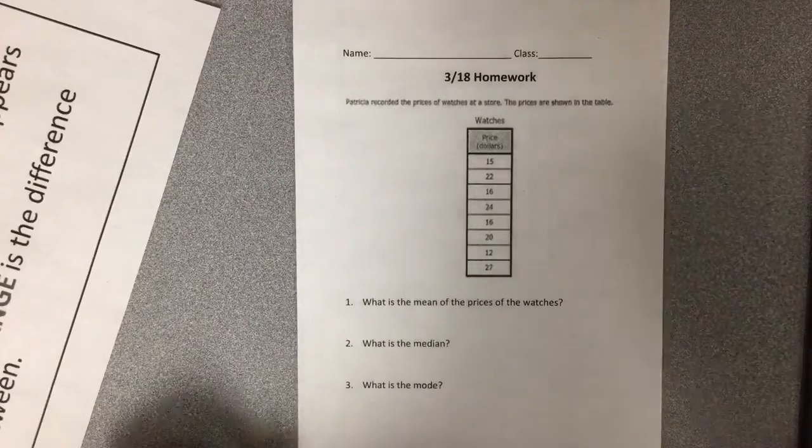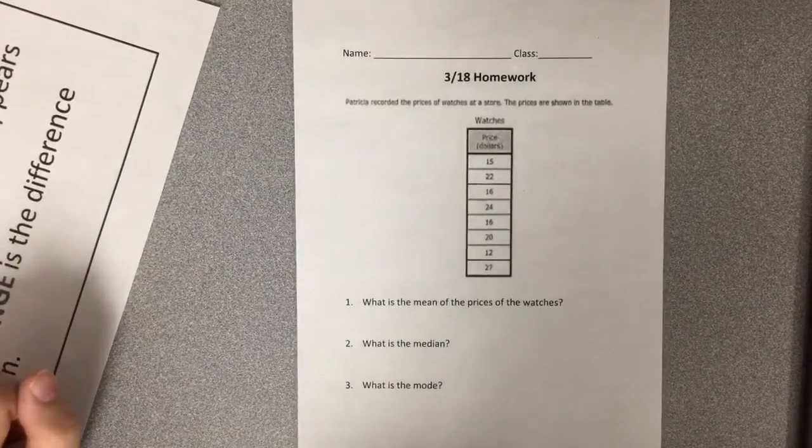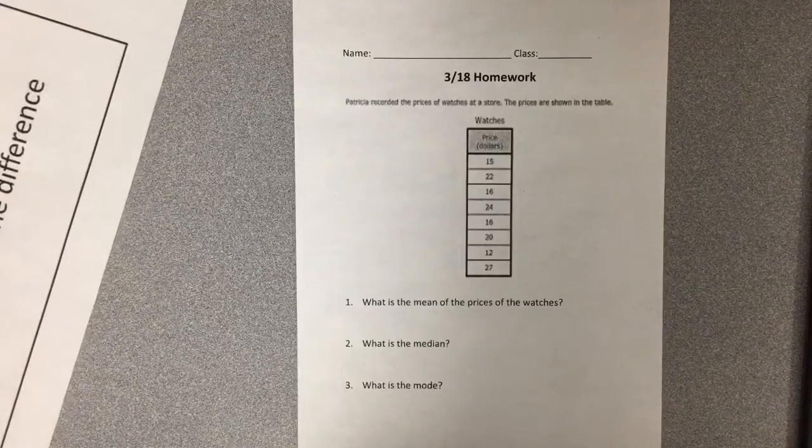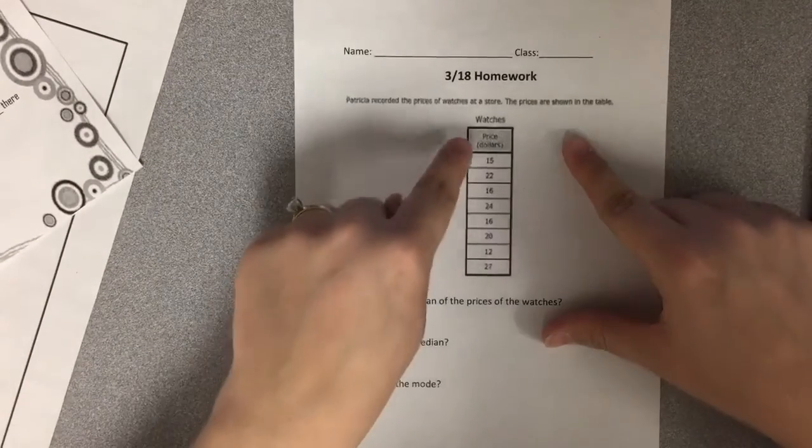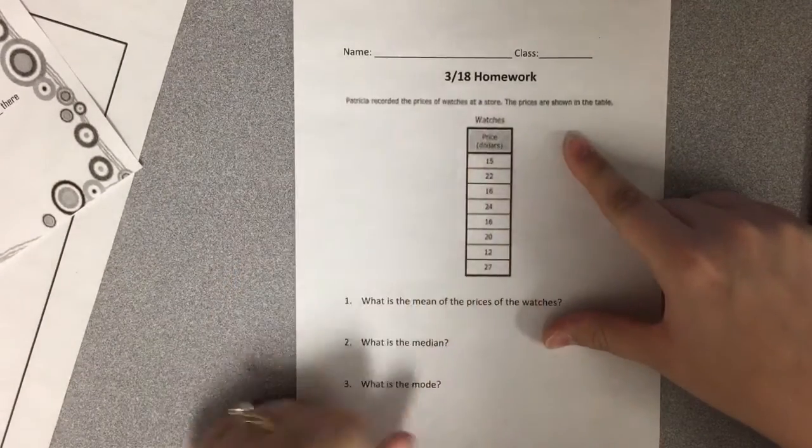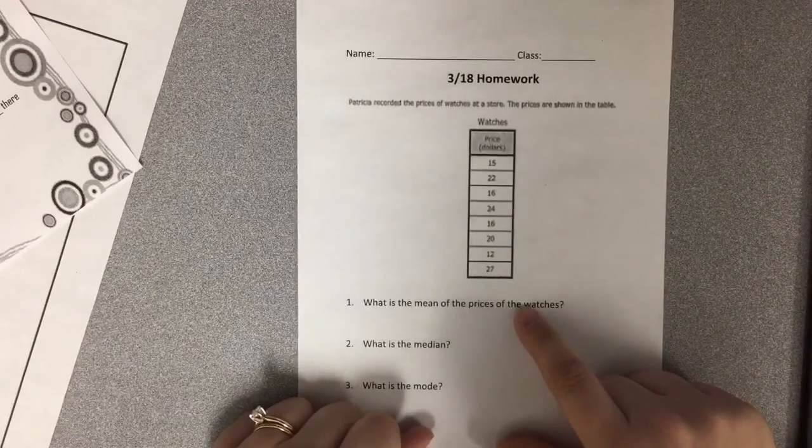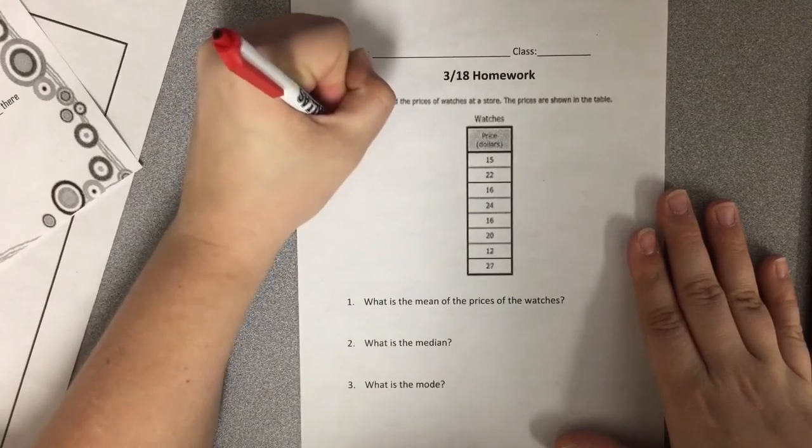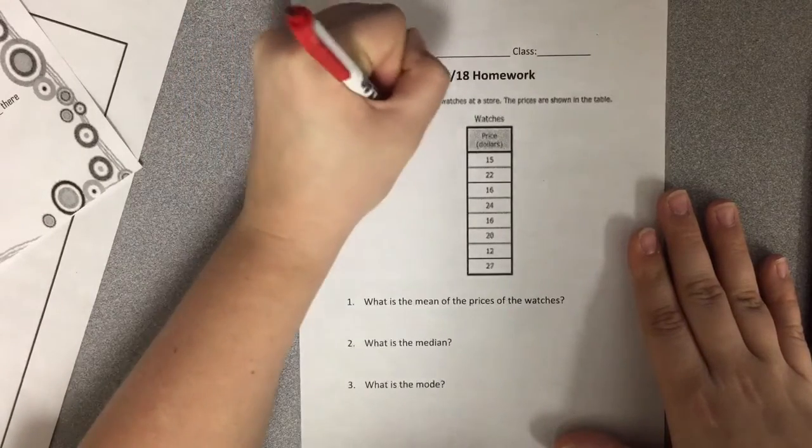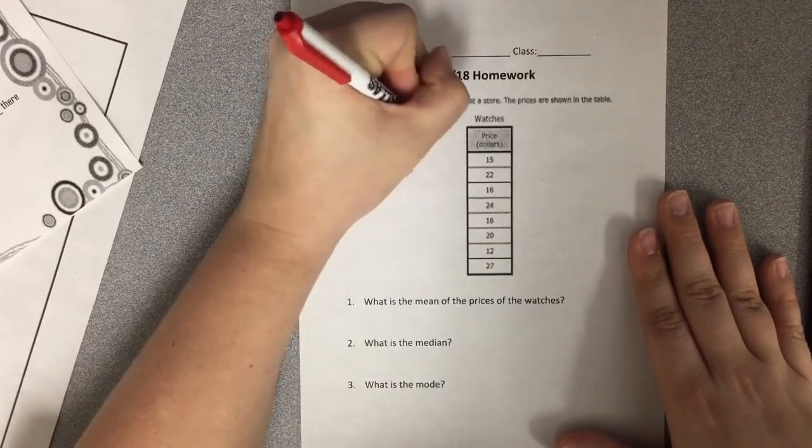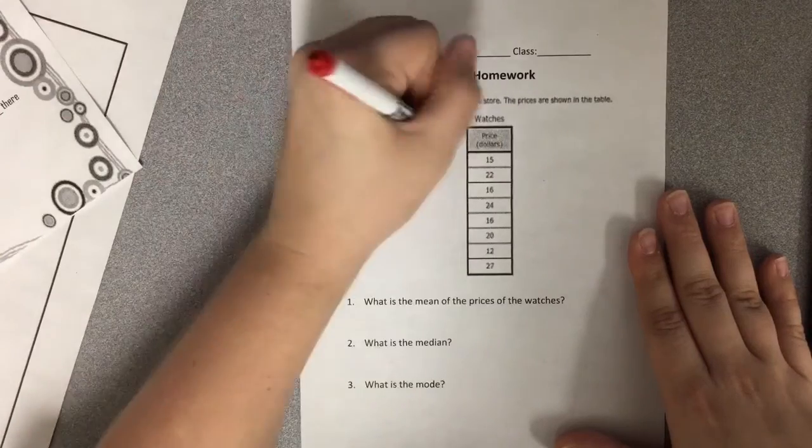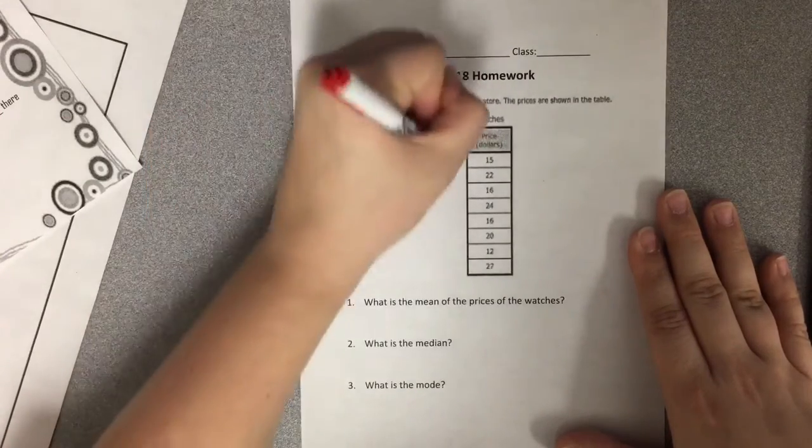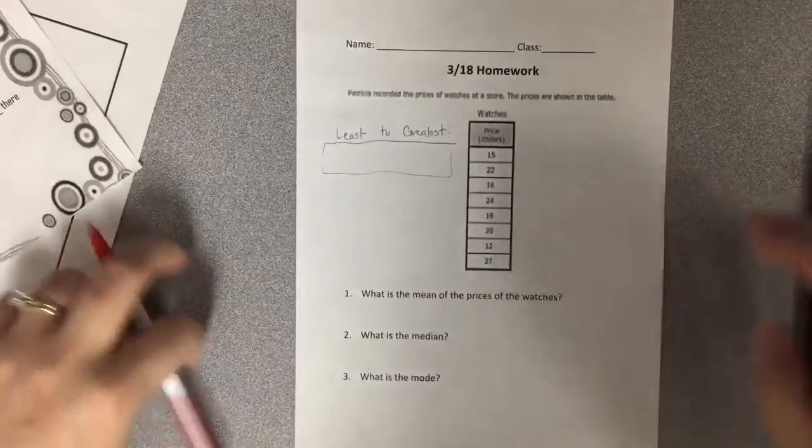So first of all we know based on the fact that we're given data that the very first thing we need to do is order this information, all of these prices, from least to greatest. And you're going to put that information somewhere in the vicinity that you have room.